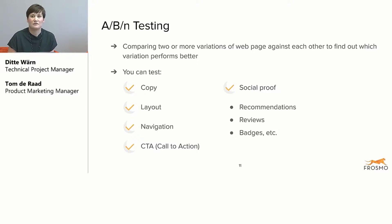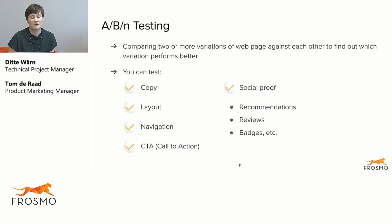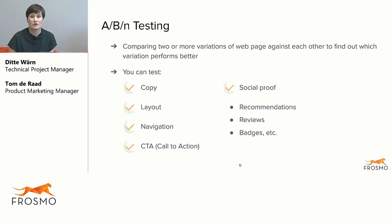A/B testing can also have more variations, so it can be A/B/C testing or even more variants can be included. But basically it's comparing two or more variations of a web page against each other to find out which variation performs better.